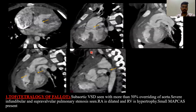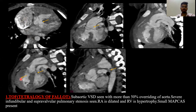First case is TOF — Tetralogy of Fallot. Here we can see a sub-aortic ventricular septal defect with more than 50% overriding of the aorta. There is severe infundibular and supravalvular pulmonary stenosis. The right atrium is dilated and the right ventricle is hypertrophic. We can also see small MAPCAs — major aortopulmonary collateral arteries.